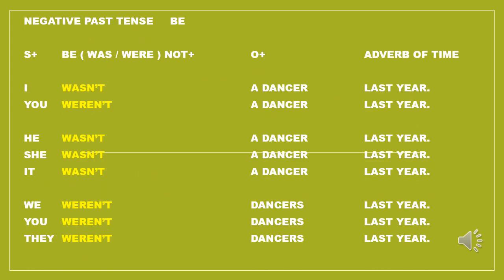More examples about past tense negative BE. 'I wasn't a dancer last year.' 'I' is the subject, 'wasn't' comes from BE past tense plus 'not', 'a dancer' is the object, 'last year' is the adverb of time. You weren't a dancer last year. He wasn't a dancer last year. She wasn't a dancer last year. It wasn't a dancer last year. We weren't dancers last year — be careful, 'weren't' starts with W-E-R, so 'dancer' changes to plural 'dancers'. You weren't dancers last year. They weren't dancers last year.